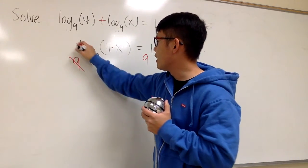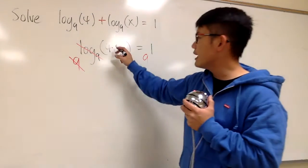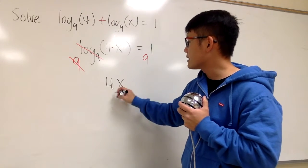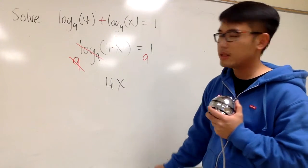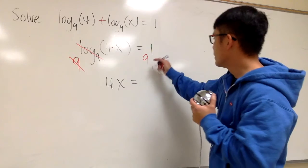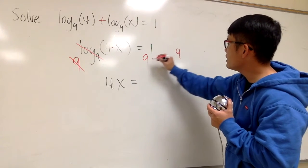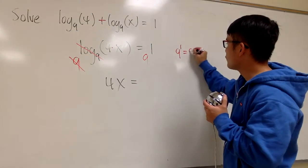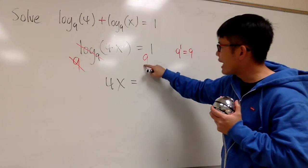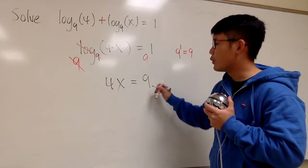The left-hand side here, 9 and log base 9, they cancel, and we'll just end up with 4 times x. Let me put down 4x. And this is equal to, this right here, notice, we are going to work out 9 to the first power. Of course, it's 9 to the first power, and that's how we get the 9.